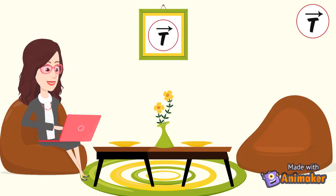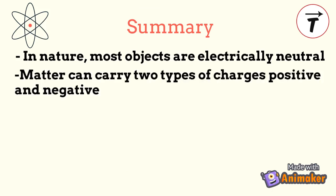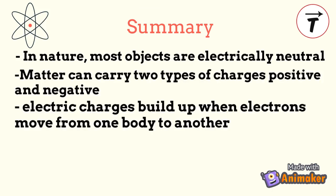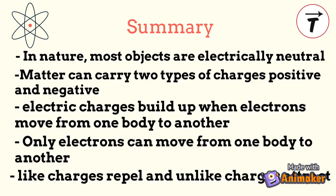Could you kindly sum up what we have learned until now? In nature, most objects are electrically neutral. Matter can carry two types of charges, positive and negative. Electric charges build up when electrons move from one body to another. Only electrons can move from one body to another. Like charges repel and unlike charges attract.